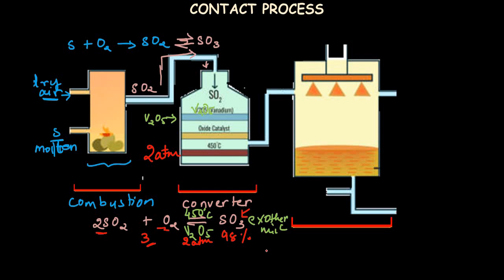To summarize the equilibrium conditions for the converter: a temperature of 450°C, a catalyst of vanadium(V) oxide (V₂O₅), and a pressure of 2 atmospheres are used to obtain a good economical yield of sulfur trioxide.